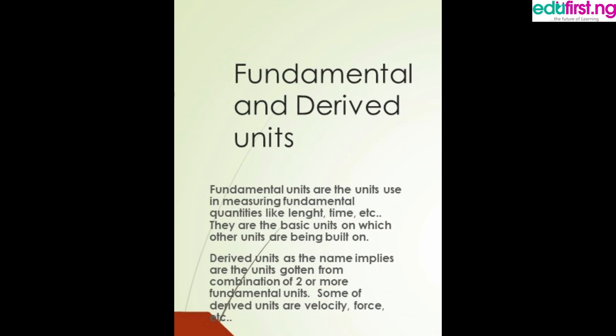Derived units are the units that are derived — we get them from combining two or more fundamental units together. Just like when you are building a house, you have one block as the foundation, the starting block, and other blocks are built on it. So derived units are the units we get from combining two or more fundamental units. They are derived from fundamental units, and they are the units for the derived quantities.